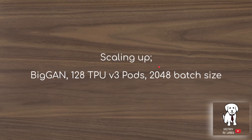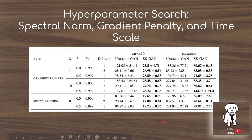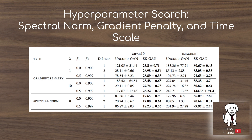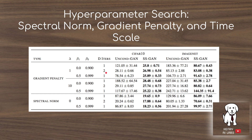They scale it up using the BigGAN model — an enormous generative adversarial network — with 128 Google TPU V3 pods and a batch size up to 2048. They also search hyperparameters for gradient penalty and spectral normalization, which control the Lipschitz constant of the discriminator to ensure the discriminator doesn't become too strong for the generator. They also iterate on how many training steps the discriminator should have per generator step, since it's heavily normalized and may need extra steps to catch up.